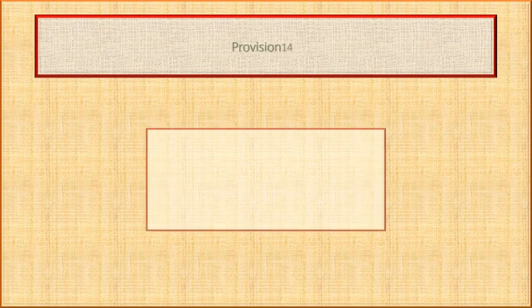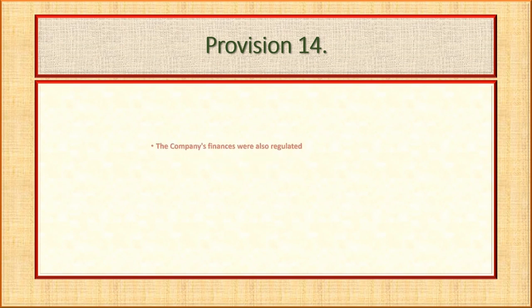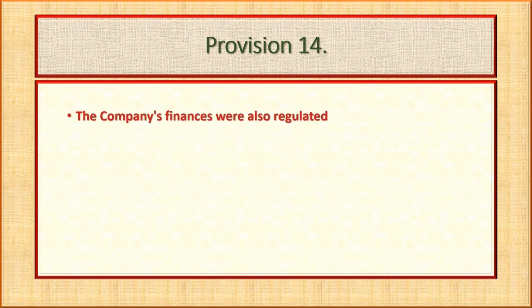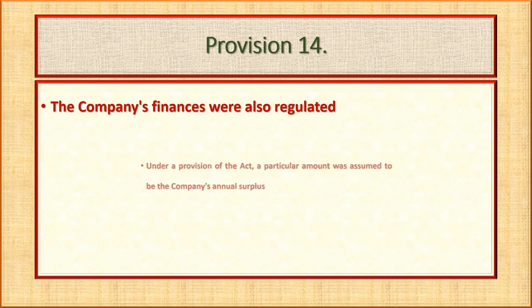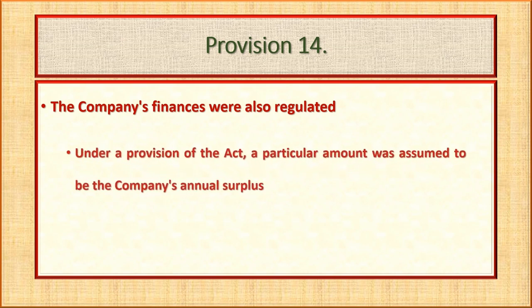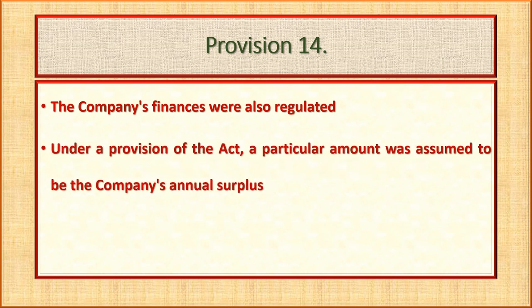It was in Provision 14 that the company's finances were also regulated. Under a provision of the act, a particular amount was assumed to be the company's annual surplus. £5 lakh were allocated from that assumed fund to pay the company's debts.